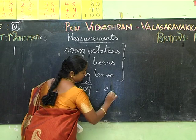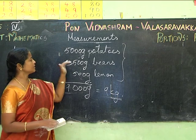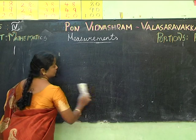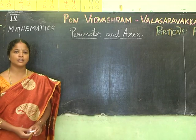Whenever you add or subtract, please convert to the same unit first. In this topic we have learnt the three main components of measurements: length, mass, and capacity — and also perimeter and area for Class 4.